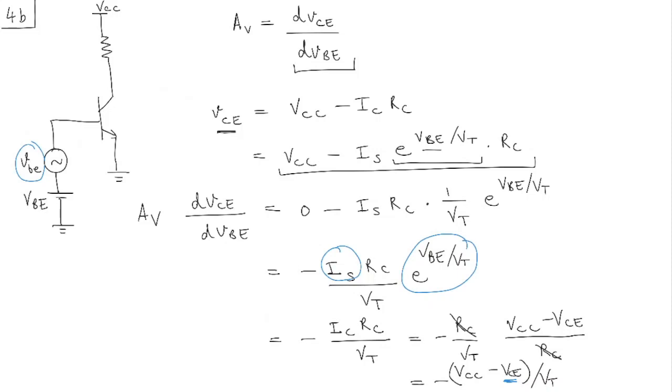So you can get, let me write it here. So AV equal to minus 10 minus 3.2 divided by 25 millivolts. And what you would get is minus 272 volts per volts. OK, so that's the gain of your amplifier.